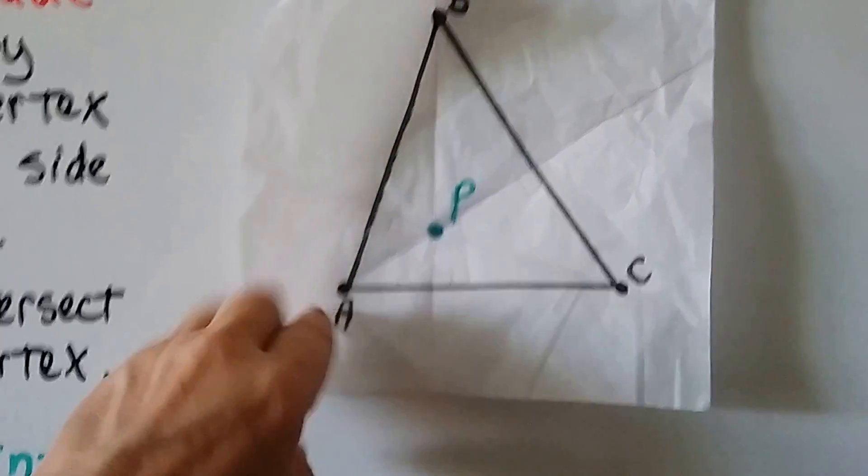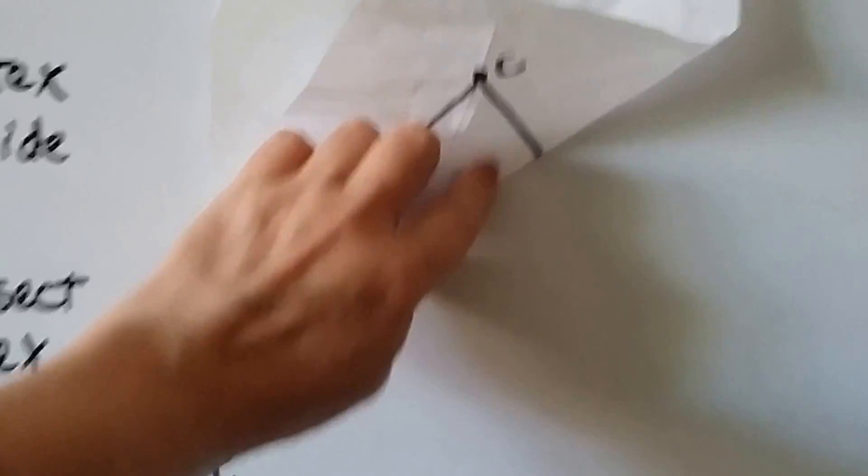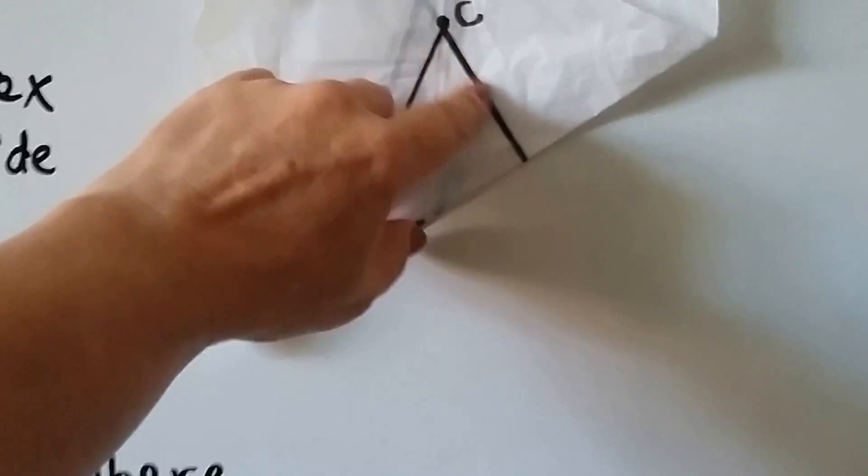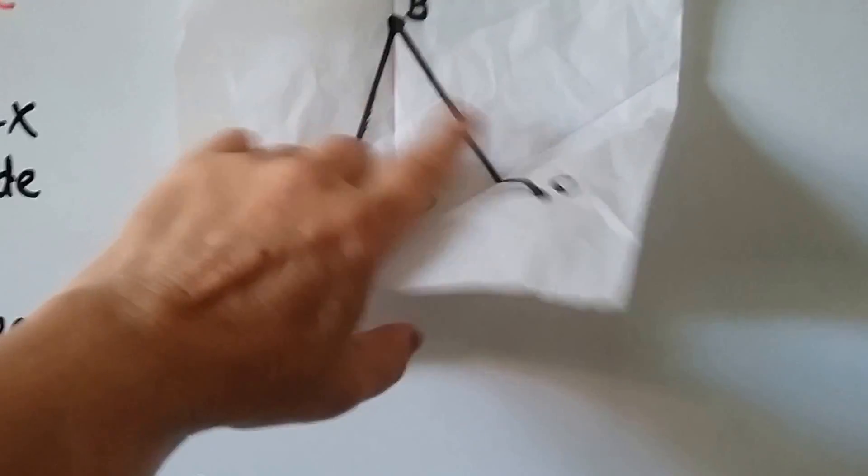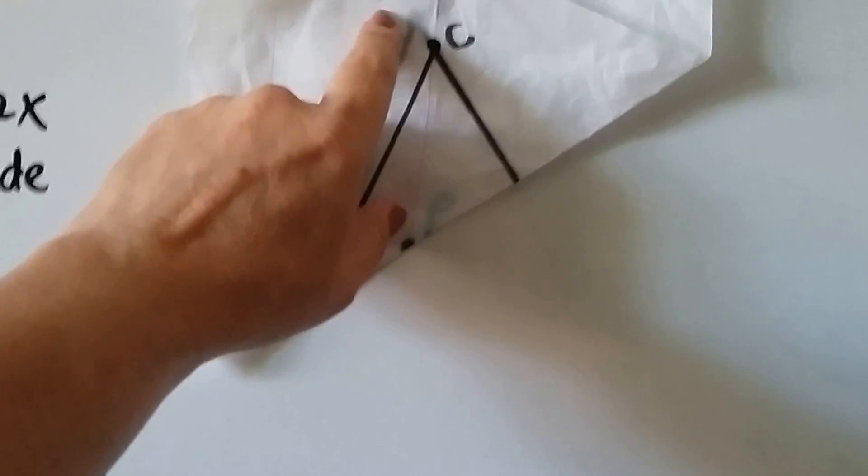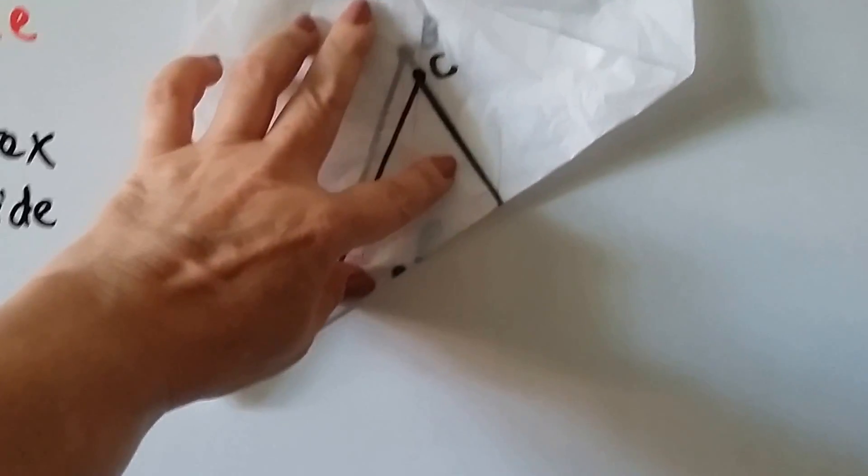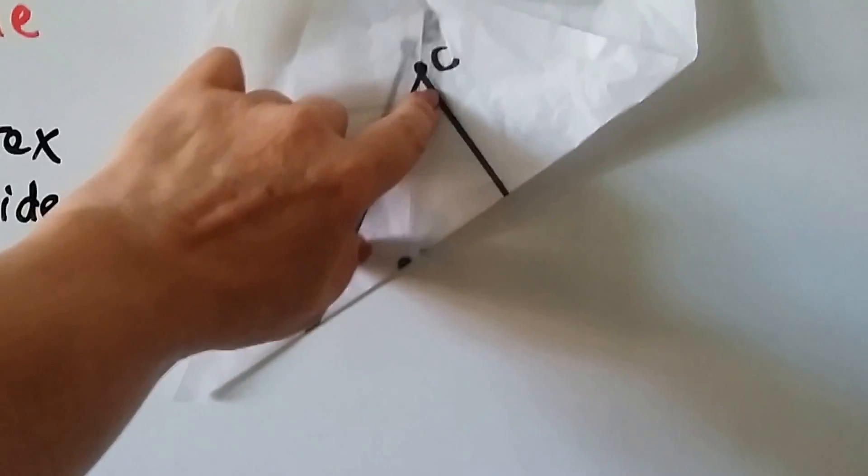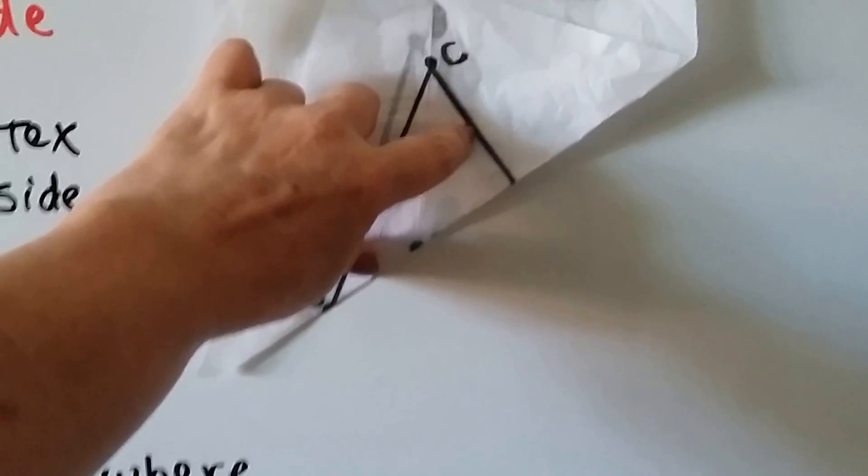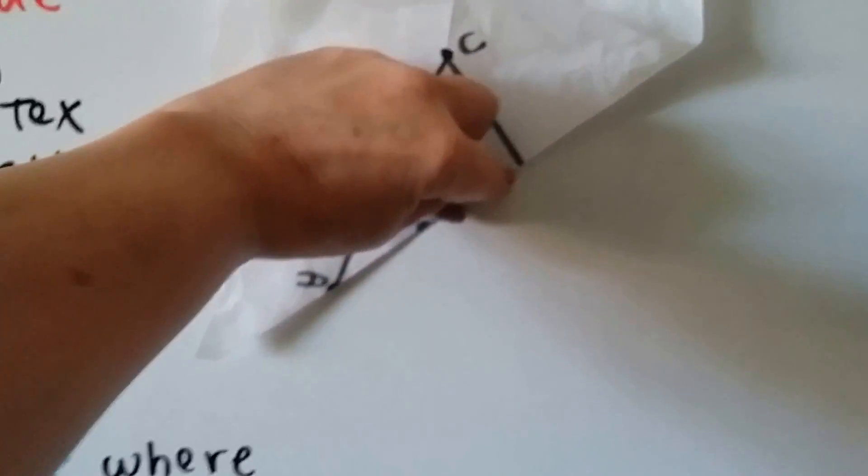So for A, we fold it on the vertex here, and we make a fold so that this line, BC, is laying upon itself like this. Now these vertices are not going to meet. See that? We want it through here so that these lines match on top of each other. And we put the fold.